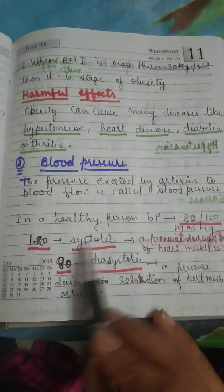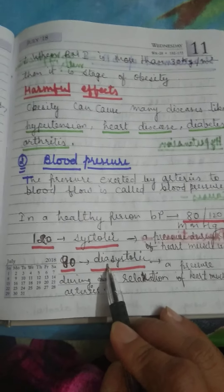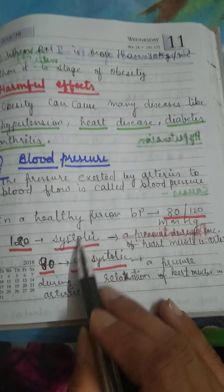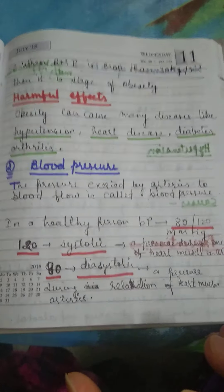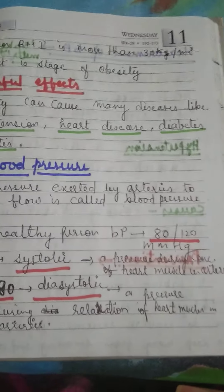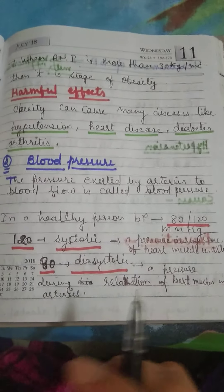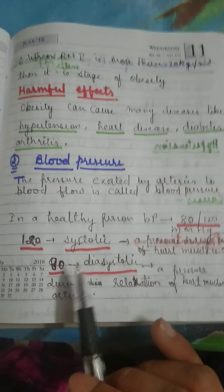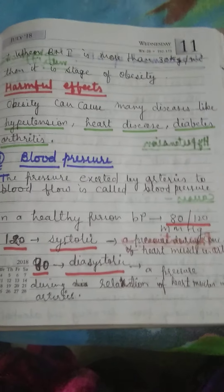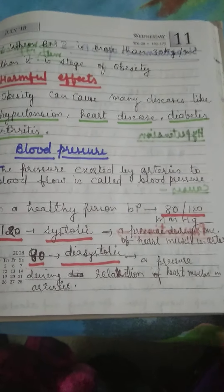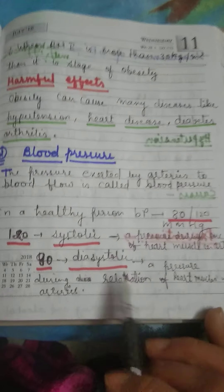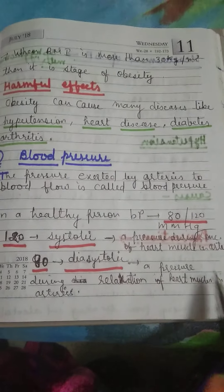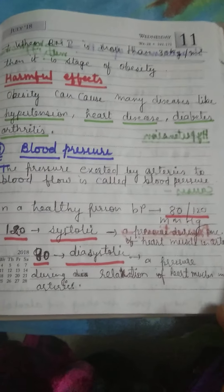120 is the systolic pressure and 80 is the diastolic pressure. Systolic pressure is the pressure in the arteries when the heart muscles are in contraction — it is always the higher value, 120. Diastolic pressure is the pressure in the arteries when the heart muscles are in relaxation — it is the lower value, 80. So a healthy person's blood pressure should be 120 over 80.